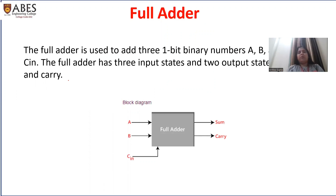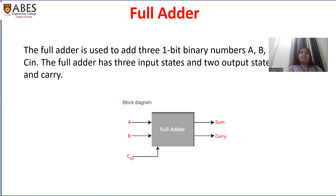Now, what is full adder? You have already learned about the full adder and half adder in the previous units, in the combinational circuit unit. Full adder is basically used to add three one-bit binary numbers. Half adder is basically used to add two one-bit binary numbers. And that is why full adder is used to add three one-bit binary numbers. So, why we need full adder? Why we have to add three one-bit binary numbers?